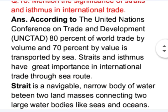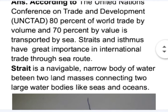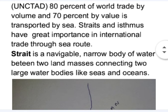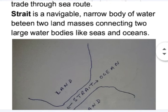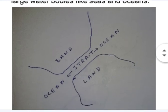First of all, what is a strait? A strait is a navigable narrow body of water between two land masses connecting two large water bodies like seas and oceans. In this diagram you can see two land masses with a narrow stretch of water body between them. This narrow stretch of water between two land masses is the strait, and it connects the two oceans on either side of it.